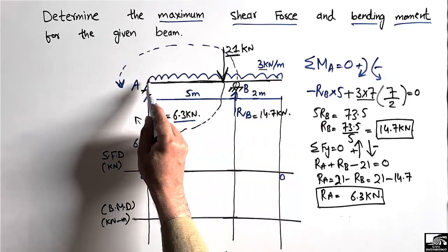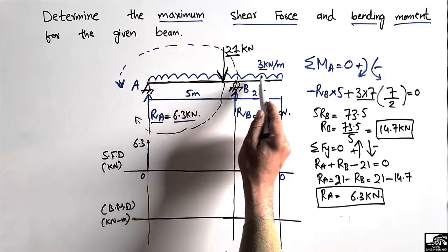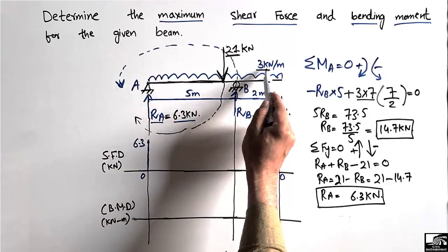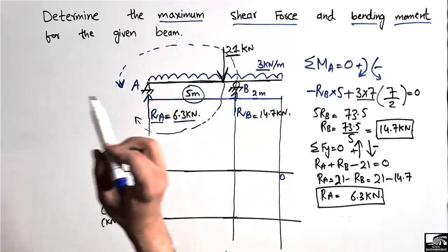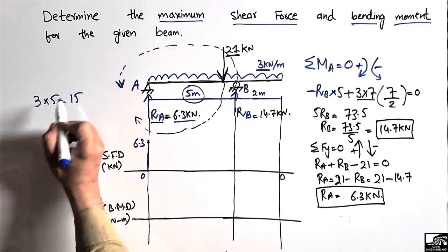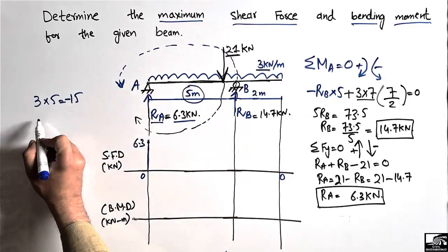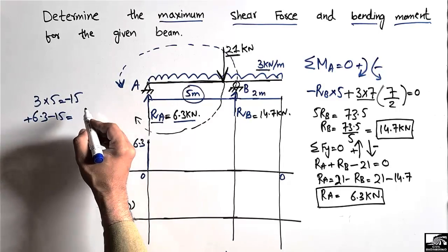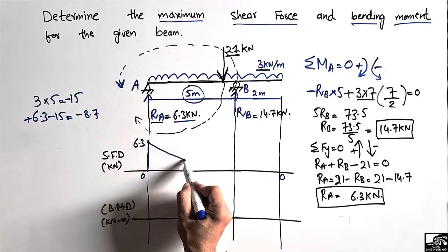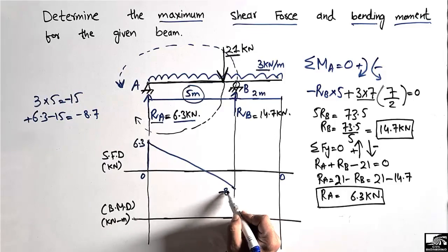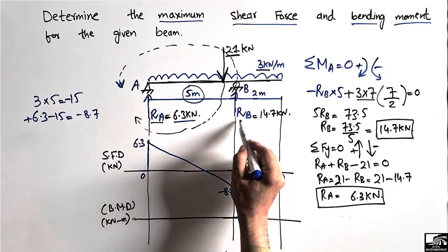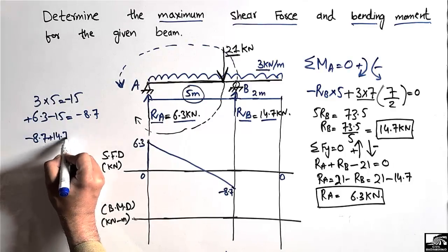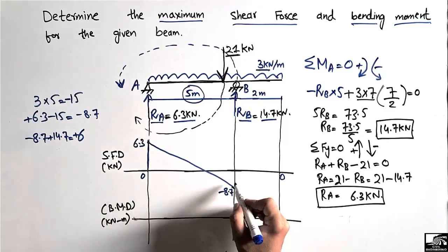The uniformly distributed load of 3 kN/m acts over the first 5-meter span. Over 5 meters this equals 3 × 5 = 15 kN acting downward, so it is −15. Therefore, at the end of the 5-meter span: +6.3 − 15 = −8.7 kN. Then reaction RB = +14.7 kN acts upward at B, giving −8.7 + 14.7 = +6 kN.